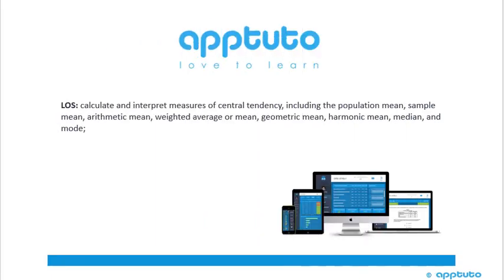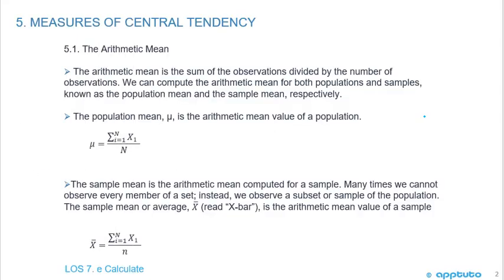This LOS is calculate and interpret measures of central tendency, including the population mean, sample mean, arithmetic mean, weighted average or mean, geometric mean, harmonic mean, median, and mode. So you can see this is a little bit of a longer LOS. We've got 11 slides.